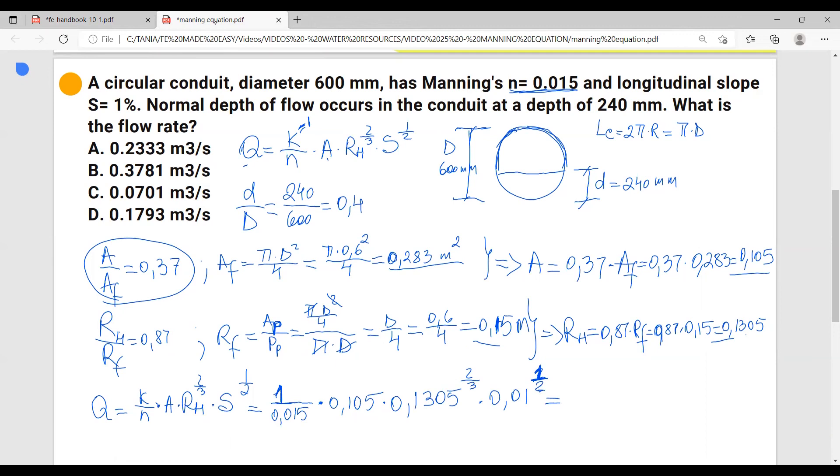I have 0.1305, and we multiply these two, then I have 0.105 multiplied, 0.015 divided, and I'm getting 0.18009.